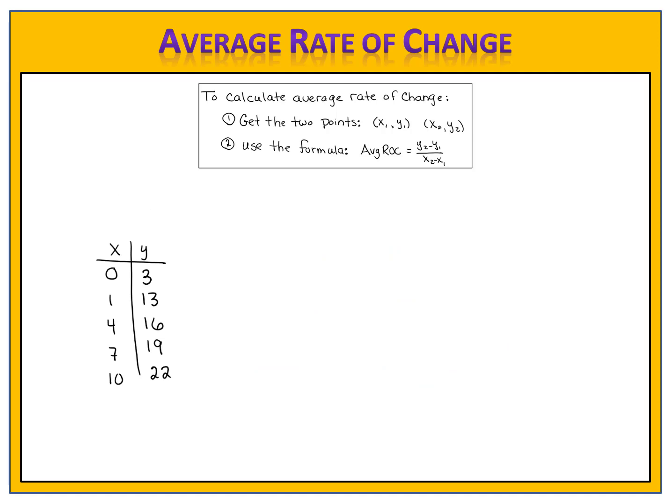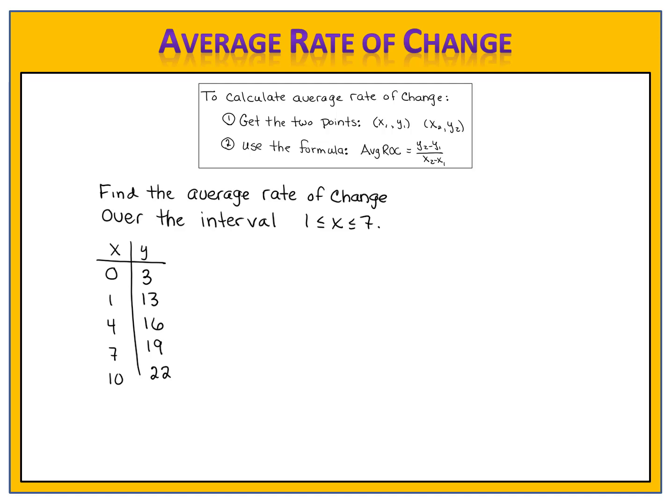Here's one for you to try. Suppose we have this input and output table. We want to calculate the average rate of change over the interval when x goes from 1 to 7. Can you find the two points and then calculate the average rate of change? Please pause the video here and give it a try.